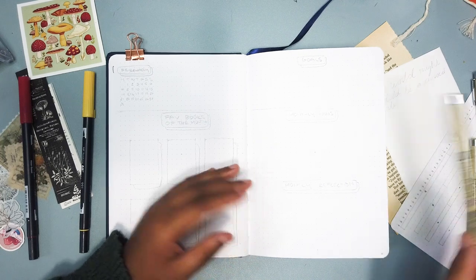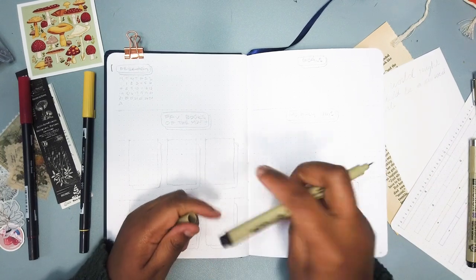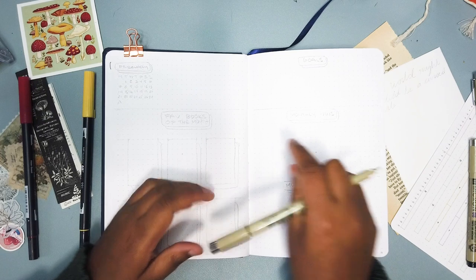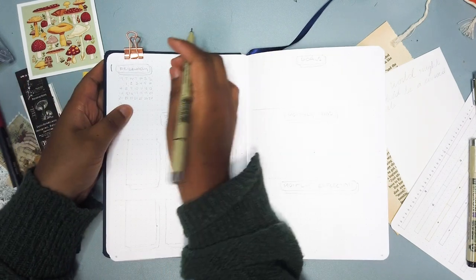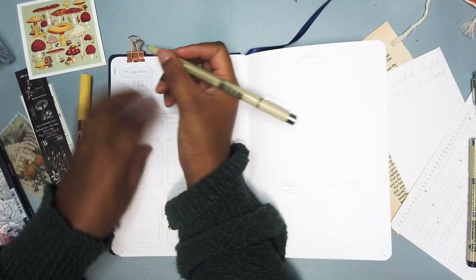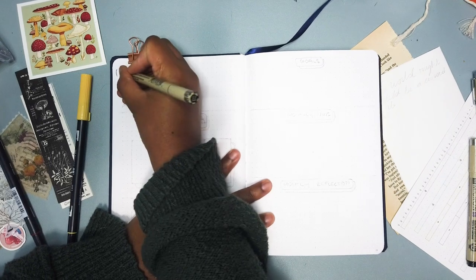Mexican Gothic is by Sylvia Moreno-Garcia. I'm trying to do book themes for my journal spreads or my monthly spreads rather. And so I really love that book.